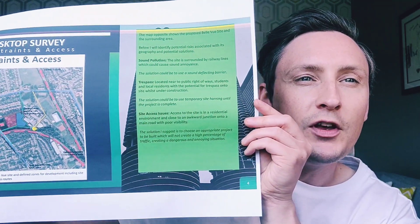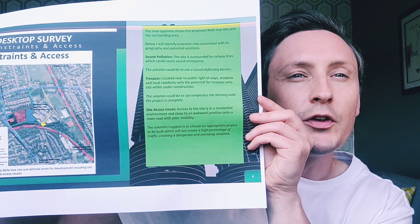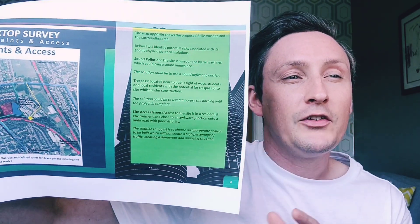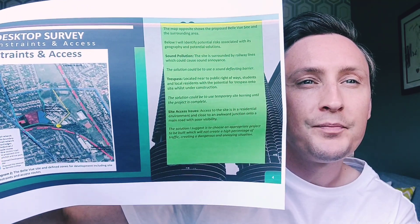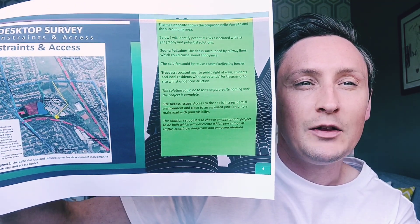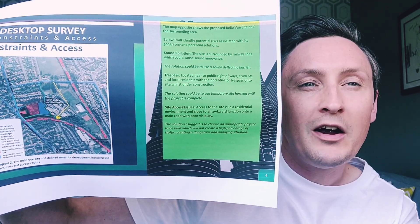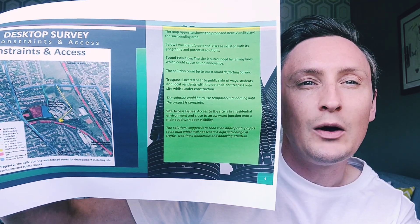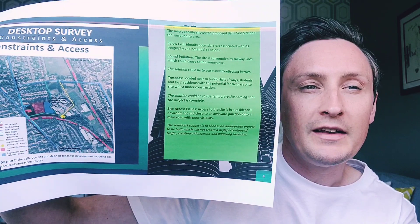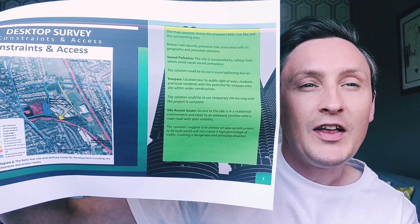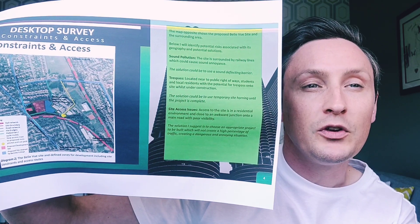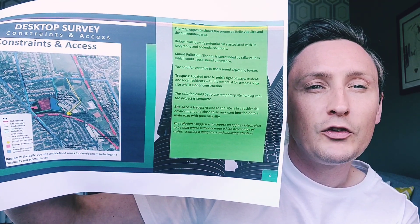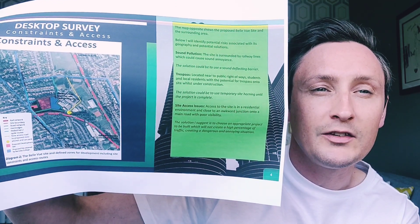I undertook a desktop survey. This map here shows the purpose of the Bellevue site and the surrounding areas, as well as the associated risks highlighted on the map. Some of the risks I identified were sound pollution — the site is surrounded by railway lines which could cause sound annoyance, so the proposed solution would be to use a sound deflecting barrier. Another issue I identified was trespassing; the site is located near public rights of way, with students and local residents having the potential to trespass onto the site whilst under construction. The solution I propose would be to use temporary site hoarding until the project is complete.